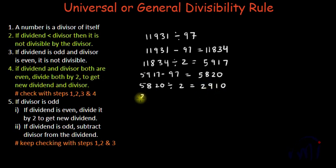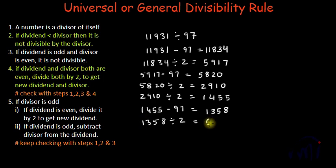This is even, so divide by 2: we get 1,455. This is odd, so subtract 97: 15 minus 7 is 8, 14 minus 9 is 5, giving 1,358. This is even, so divide by 2: we get 679. Now subtract 97.